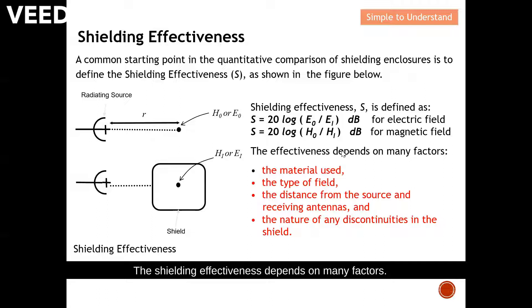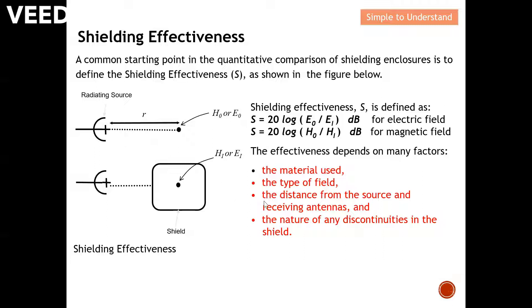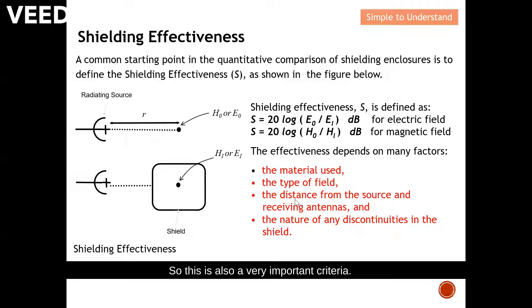The shielding effectiveness depends on many factors. First, the type of material you're going to use. The type of field, which means is it E field or H field. The distance from the source and receiving antenna—the further you are, most likely you're receiving a weaker signal. And the nature of any discontinuities in the shield, which determines the overall effect of the shielding.